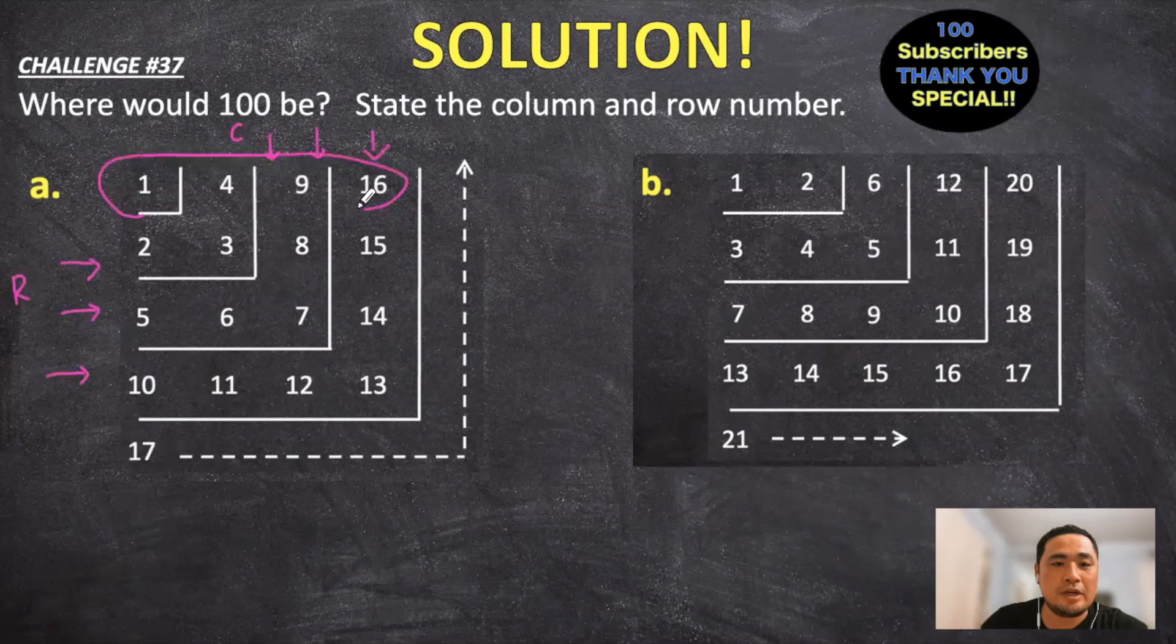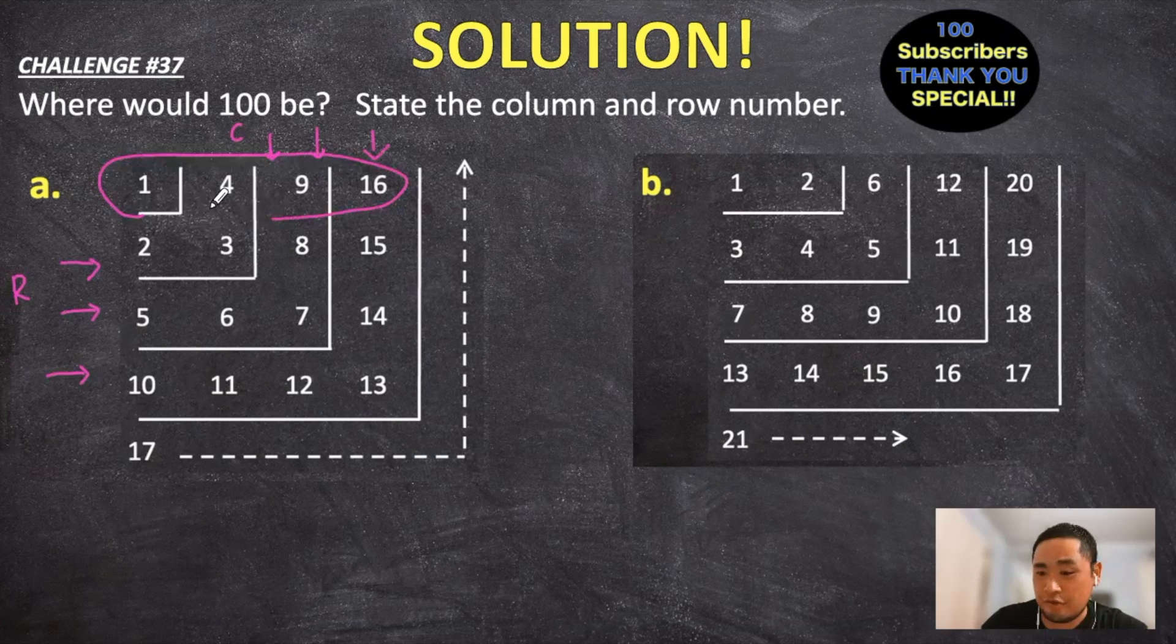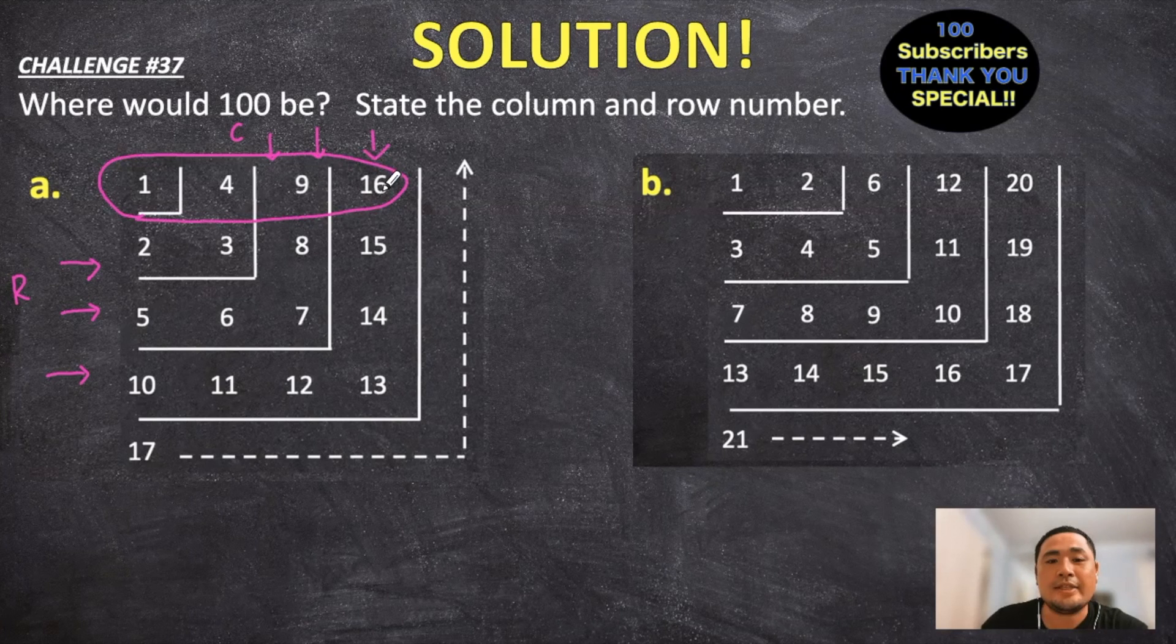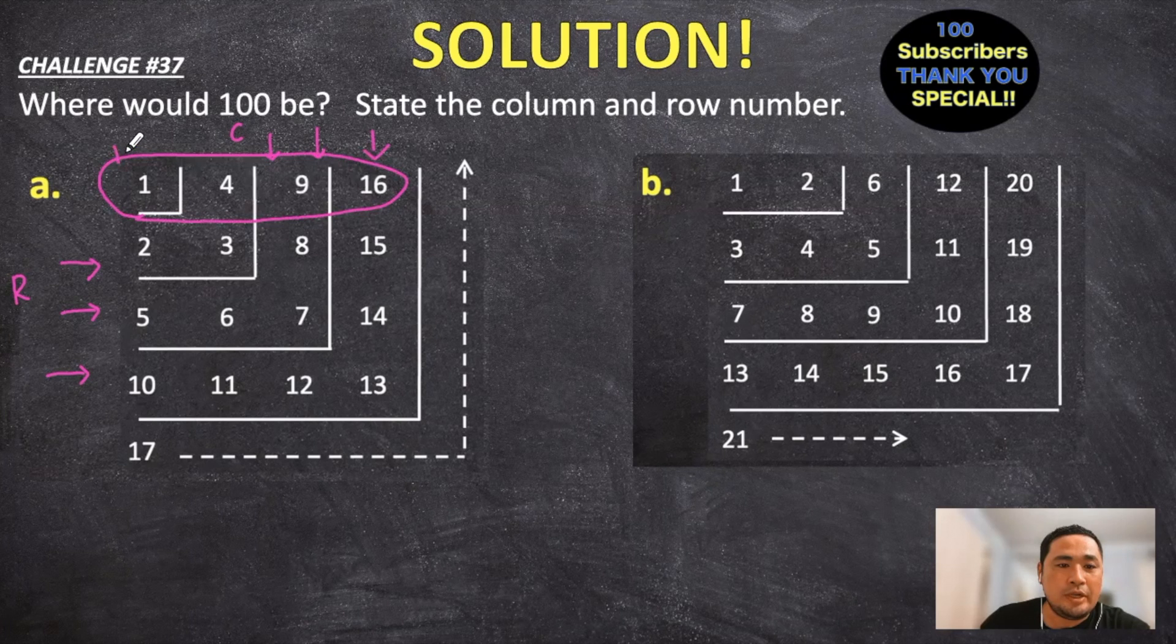And focus our attention on the first row right here, we have the numbers 1, 4, 9, and 16. The 1 can be written as 1 times 1, the 4 as 2 times 2, the 9 can be written as 3 times 3.